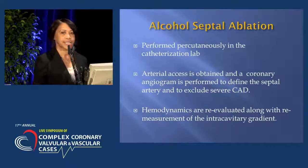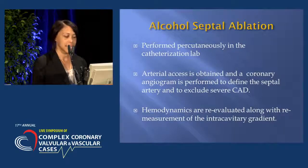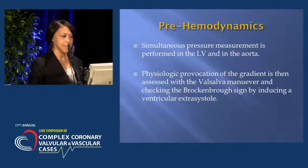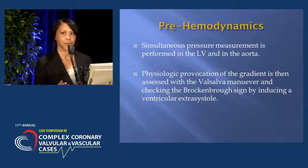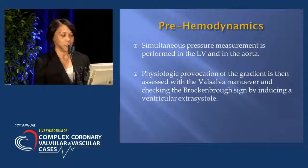The procedure is performed percutaneously in the cath lab. Arterial access is obtained and a coronary angiogram is performed to define the septal artery and to exclude severe coronary artery disease. Hemodynamics are re-evaluated along with re-measurement of the intracavitary gradient. For pre-hemodynamics, simultaneous pressure measurements are performed in the left ventricle and in the aorta. A physiologic provocation of the gradient is then assessed with a Valsalva maneuver, and we check the Brockenbrough sign by inducing a ventricular extrasystole.